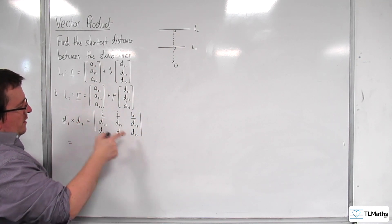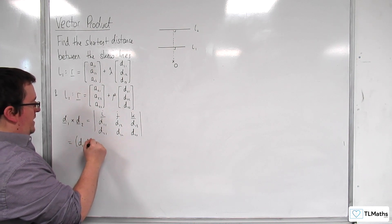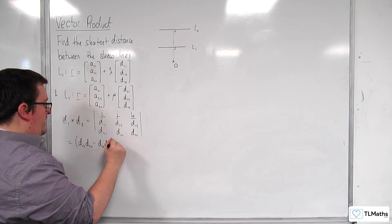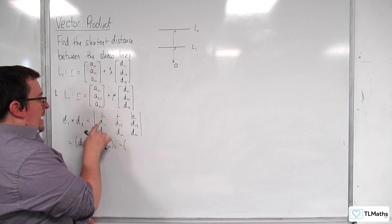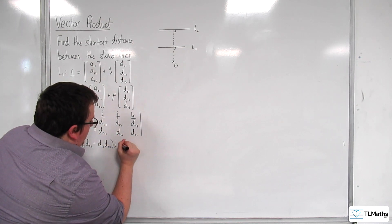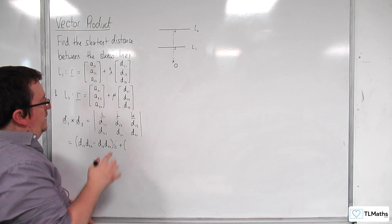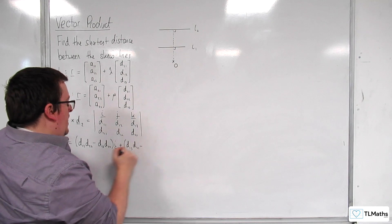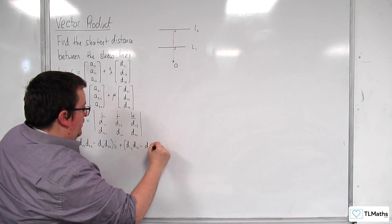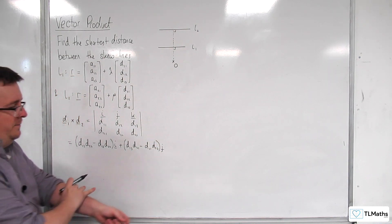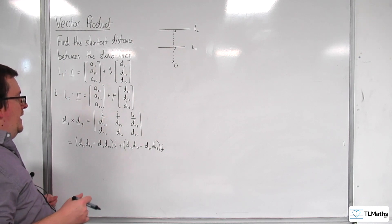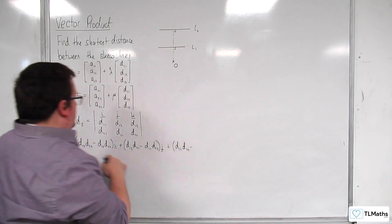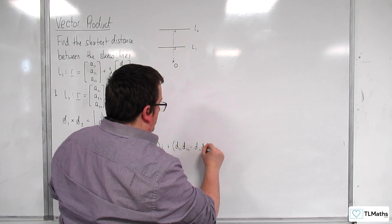Expanding the determinant: for the I component we have D12·D23 minus D13·D22. Then, taking away the J component — reversing the process — we get D13·D21 minus D11·D23. And for the K component, plus D11·D22 minus D12·D21.